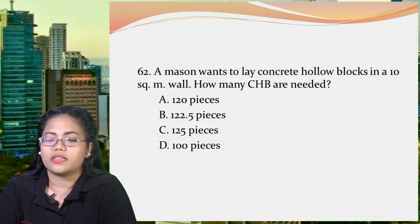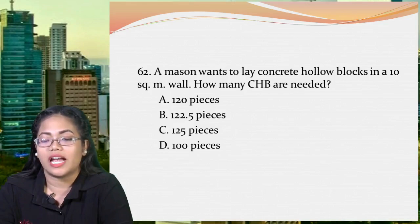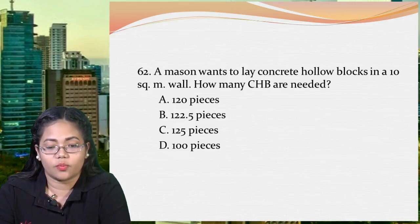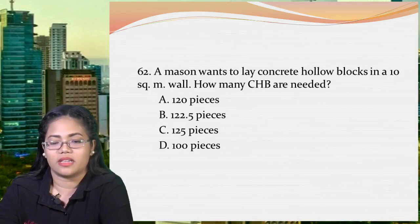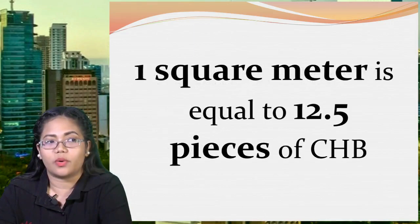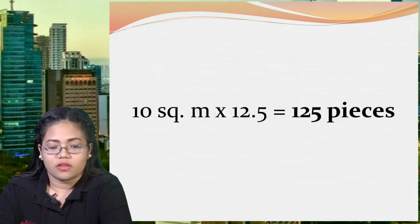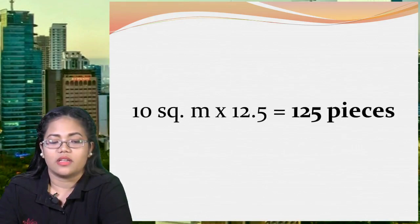Next: a mason wants to lay concrete hollow blocks in a 10 square meter wall. How many concrete hollow blocks are needed? A: 120 pieces, B: 122.5 pieces, C: 125 pieces, or D: 100 pieces. Always remember that 1 square meter equals 12.5 pieces of CHB. So 10 square meters times 12.5 equals 125 pieces. The correct answer is letter C, 125 pieces.